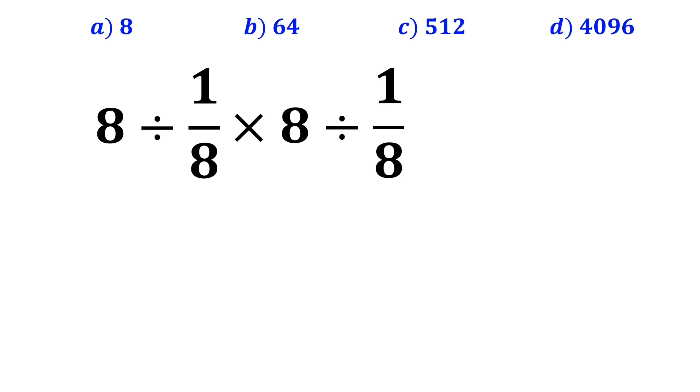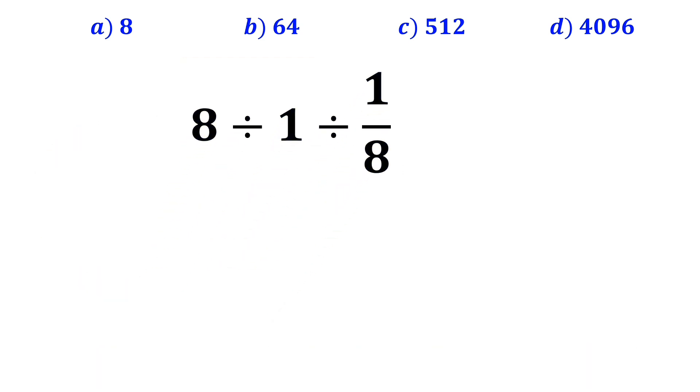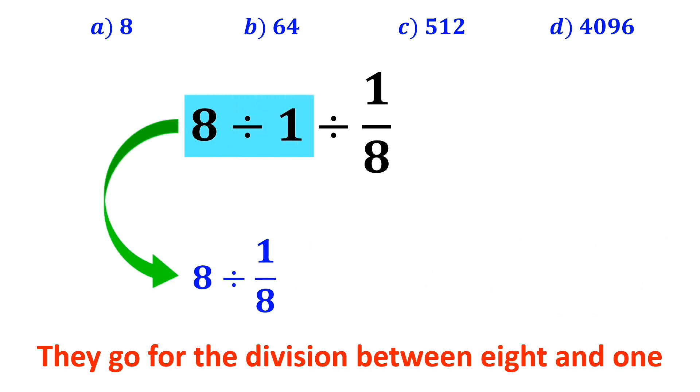In the first step, many people go straight to the expression 1 over 8 times 8, because they think multiplication has priority over division. And they tend to cancel out the 8's. So, this expression simplifies to 8 divided by 1 divided by 1 over 8. In the next step, they go for the division between 8 and 1, and rewrite this expression as 8 divided by 1 over 8, which gives them the answer 64.